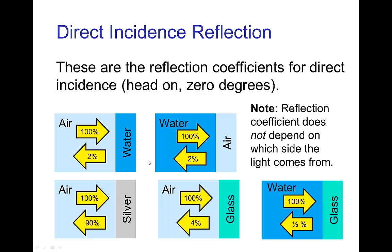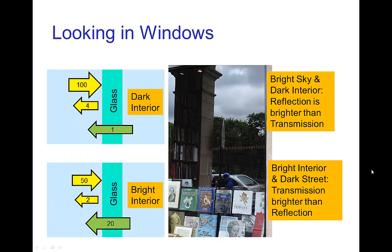At zero degree, head-on angle of incidence, here are some values for the reflection coefficient. Light striking water from air is about two percent reflected, and vice versa — when light is coming out of water and goes into air at the interface, there's about two percent reflected back into the water. This coefficient does not depend on which side the light is traveling. Other materials are more reflective: silver is highly reflective at about ninety percent, air to glass is about four percent — twice as much as air to water.